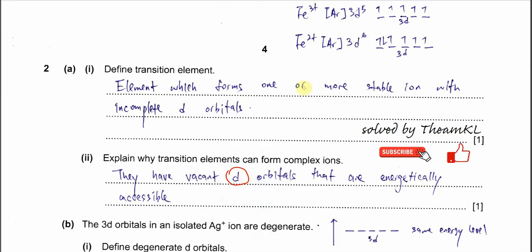We need to know that these transition elements — especially iron, chromium, and copper — have empty 4s and 4p orbitals. It is these empty orbitals that can form dative bonds with the ligand and allow them to form complex ions. It is actually the vacant orbitals in the transition metal cation, not the d orbitals specifically. That is my point of view.